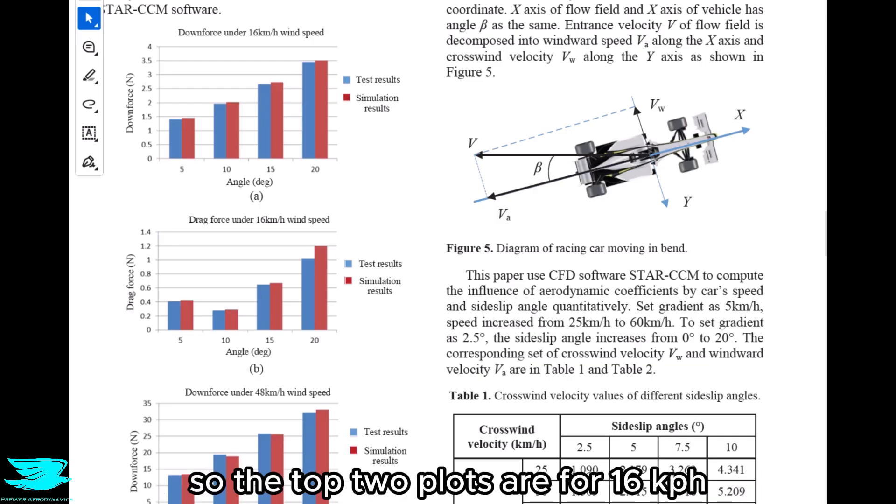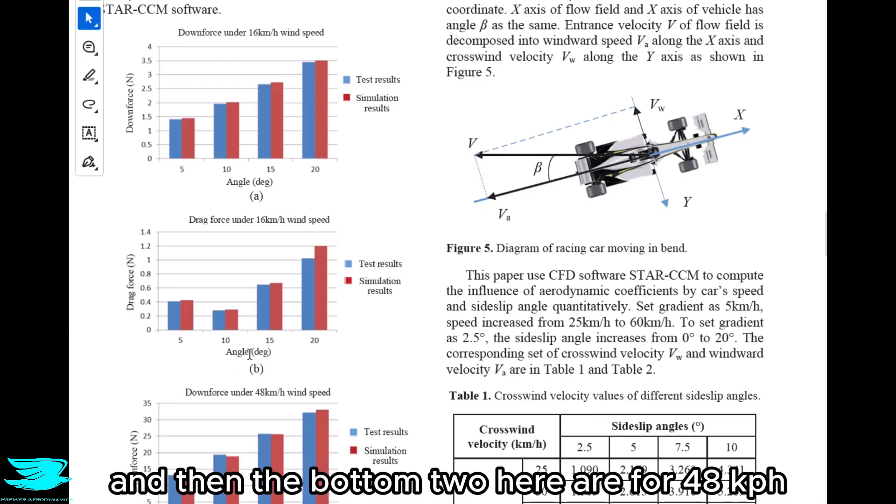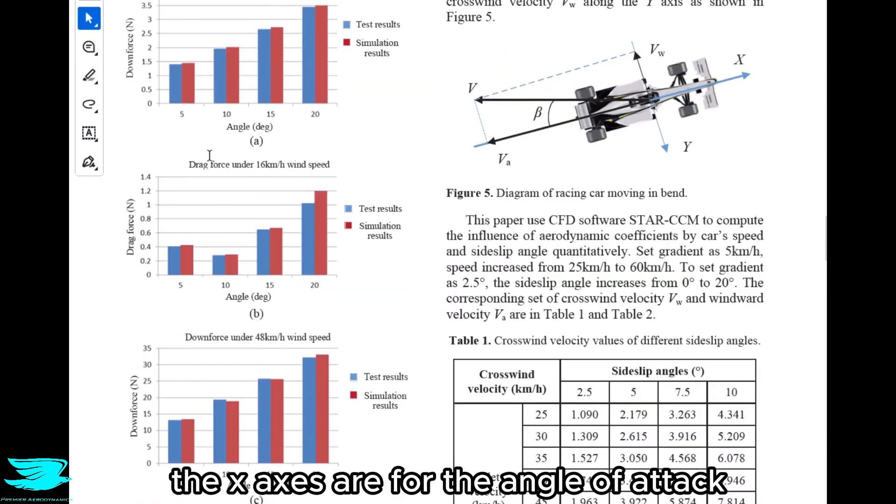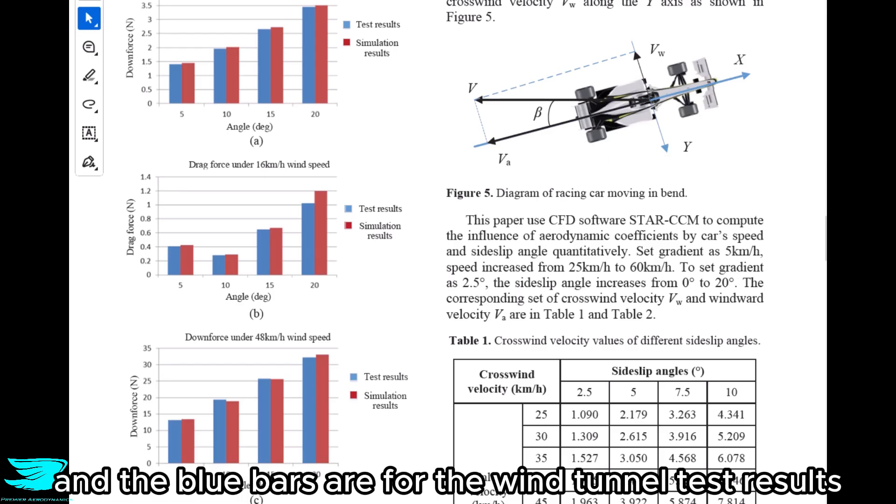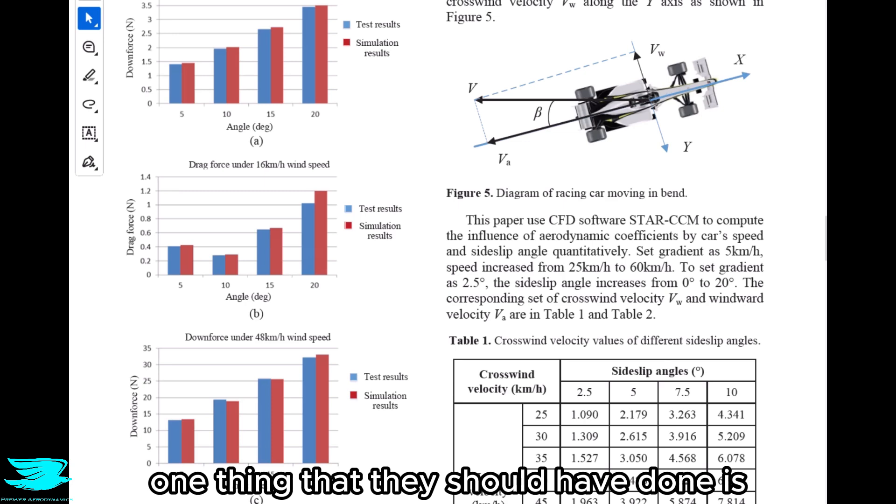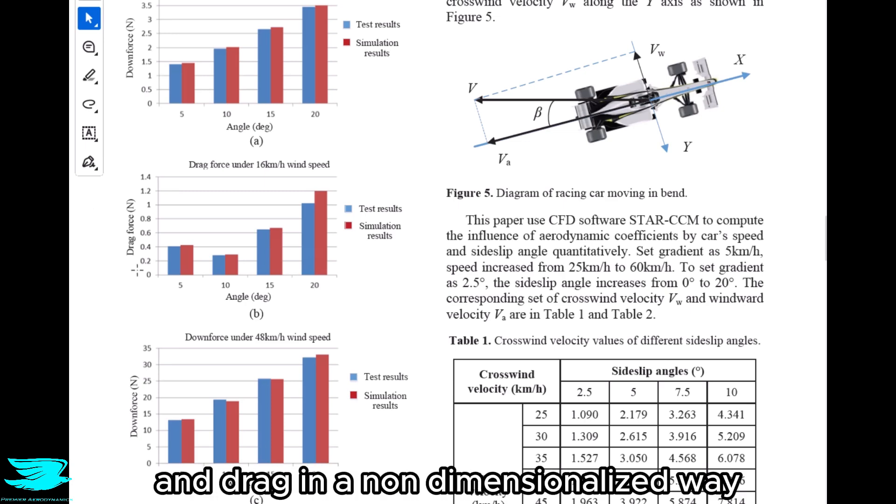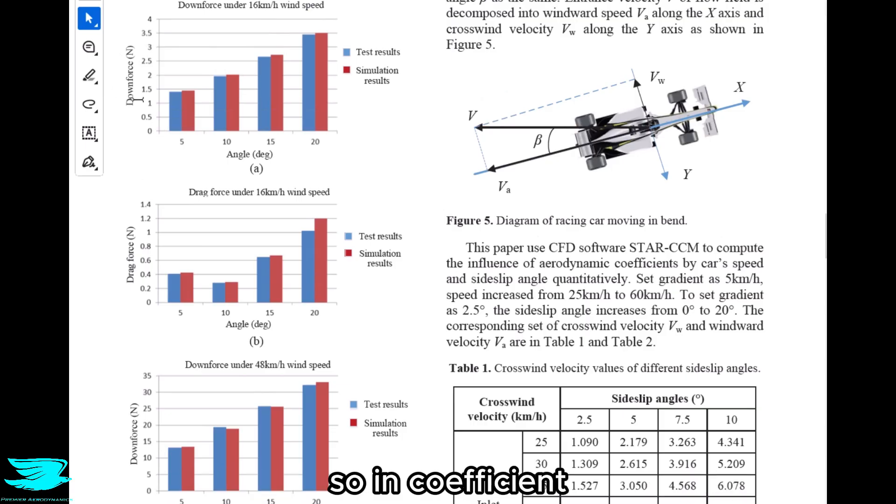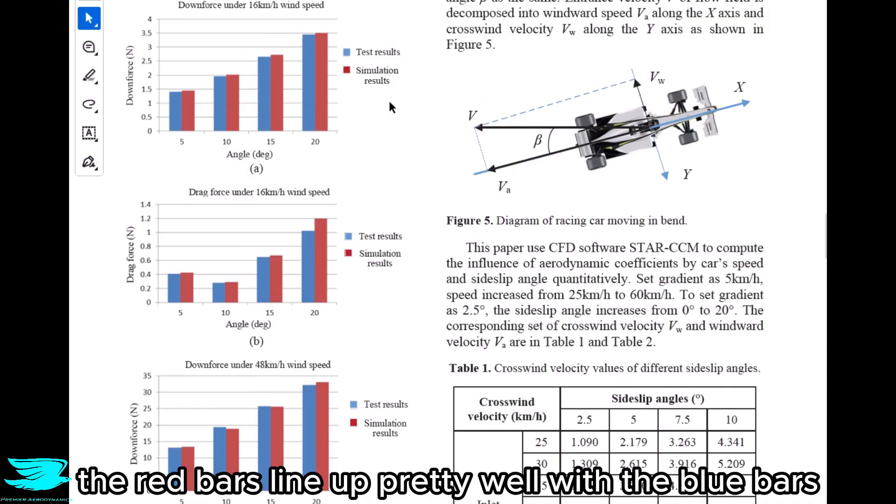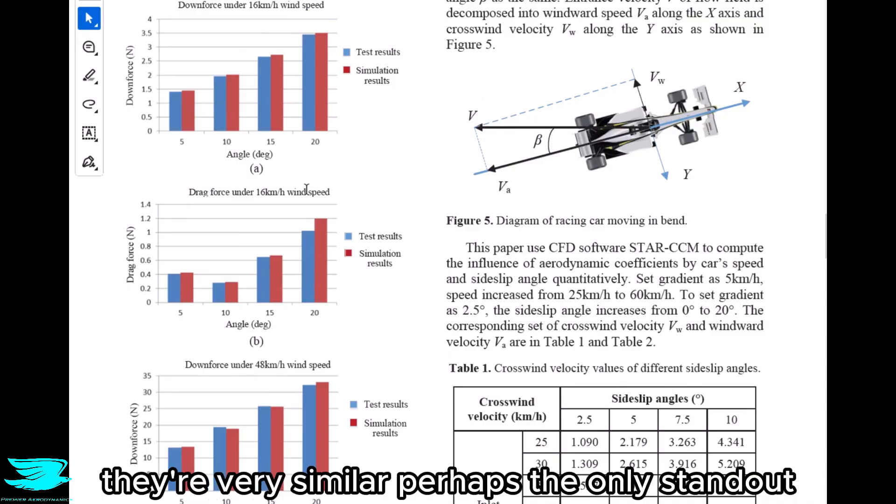The top two plots are for 16 kph, and the bottom two here are for 48 kph. The x-axis are for the angle of attack, and the blue bars are for the wind tunnel test results, and the red bars are for the CFD results. One thing that they should have done is really plotted the downforce and drag in a non-dimensionalized way, so coefficients. It's not a big deal, but it's just good practice. So first of all, the red bars line up pretty well with the blue bars. At the very least, the trends are very good, they're very similar.